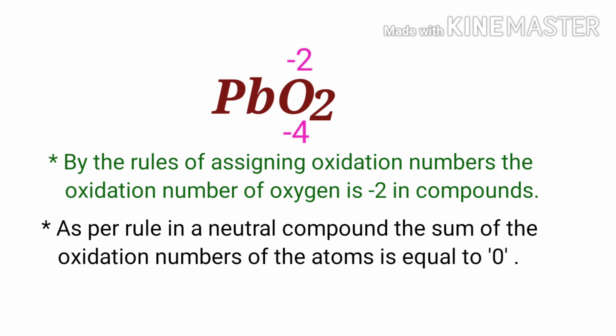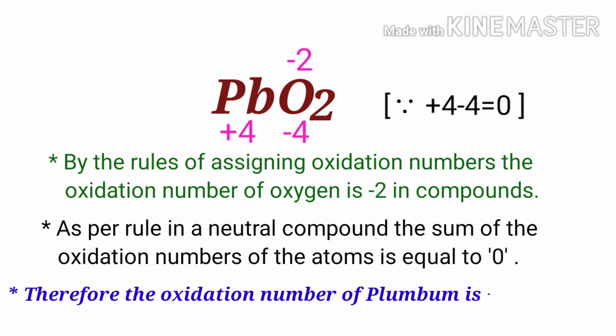So the number under Pb must be plus 4. Therefore the oxidation number of plumbum is plus 4 in plumbic oxide.